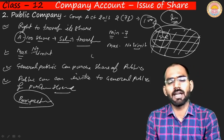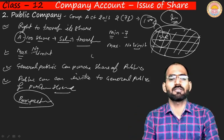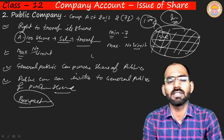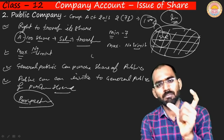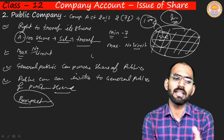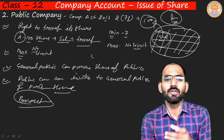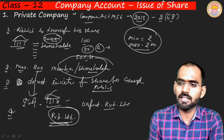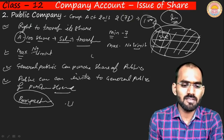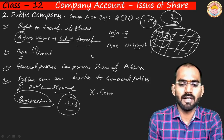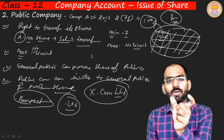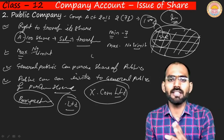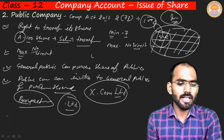In a public company, shares are issued to the general public, and the general public purchases them. The key difference: a private company cannot call money from the public or issue shares publicly, but a public company — as the name suggests — can call capital from the general public. The naming convention: if a company has 'Pvt. Ltd.' it is a private company; if it has only 'Ltd.' (e.g., 'Yax Company Limited'), it is a public company.